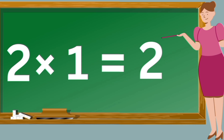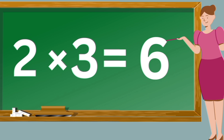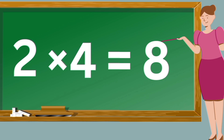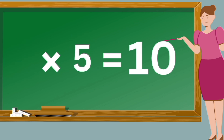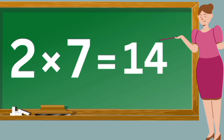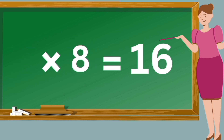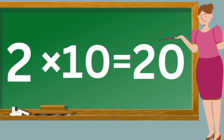Two ones are two. Two twos are four. Two threes are six. Two fours are eight. Two fives are ten. Two sixes are twelve. Two sevens are fourteen. Two eights are sixteen. Two nines are eighteen. Two tens are twenty.